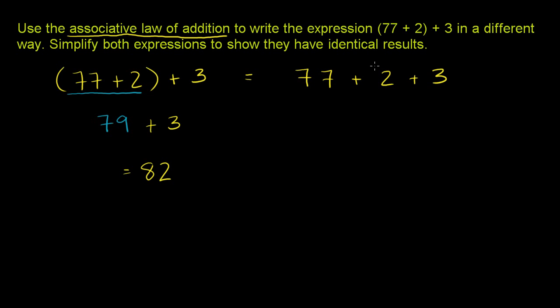But the associative law tells us I could do 77 plus (2 plus 3). I could add this first, and then add it to 77, and it's going to be the exact same thing as if I add these two guys first, and then add the 3. And let's verify that for ourselves.